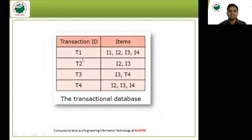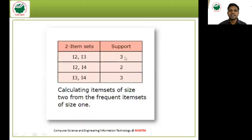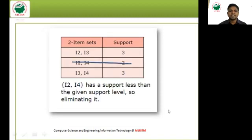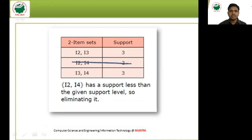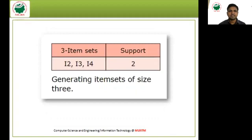Verifying the support of {I2, I3}: in transaction T1 both I2 and I3 are present; in T2 both are present; in T4 both are present — so support is 3. Now, {I2, I4} has support 2, which is less than the given support threshold, so we eliminate it. The remaining frequent item sets of size 2 are {I2, I3} and {I3, I4}.